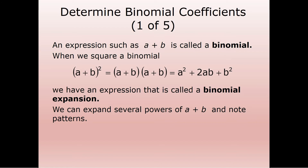Any expression where we've got two terms being added or subtracted is called a binomial — A plus B. When we square it, when we get A plus B squared, remember this was a specific formula. So we're looking at A times A is A squared, we've got an AB and an AB gives us two AB and then B squared. This is the binomial expansion to the second power.